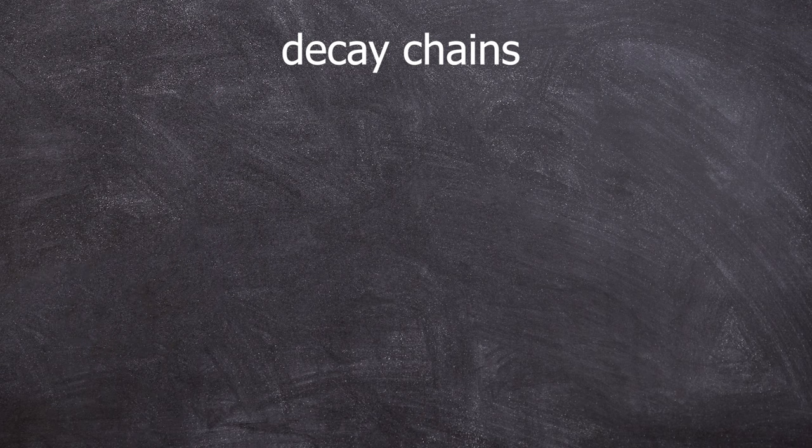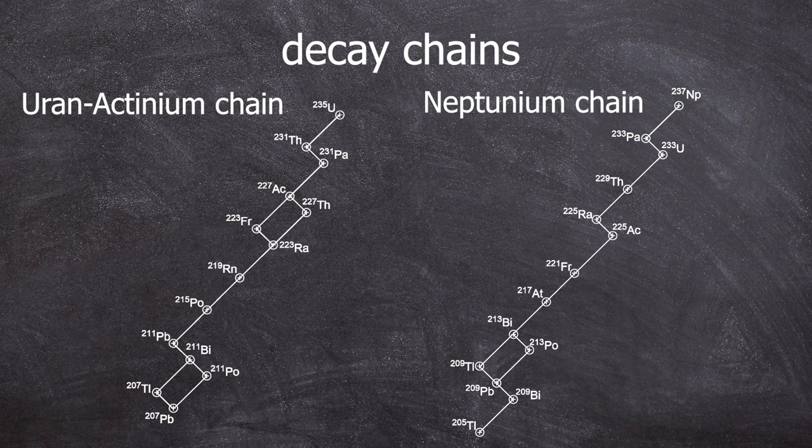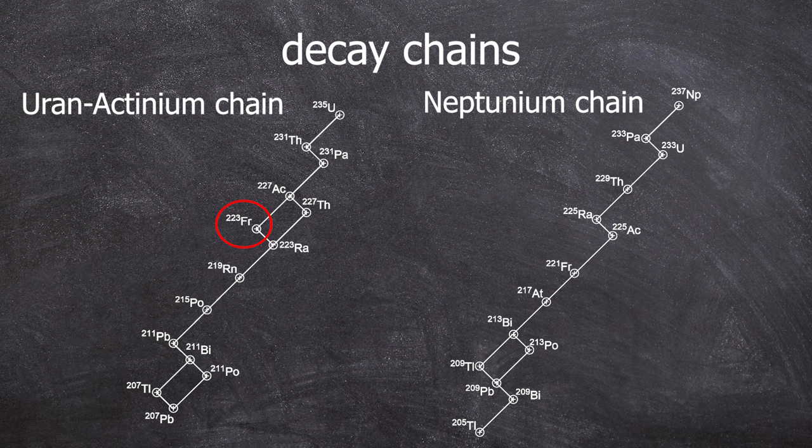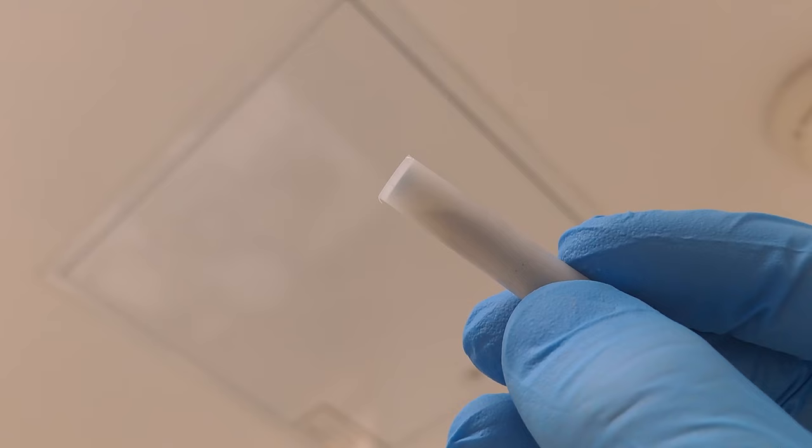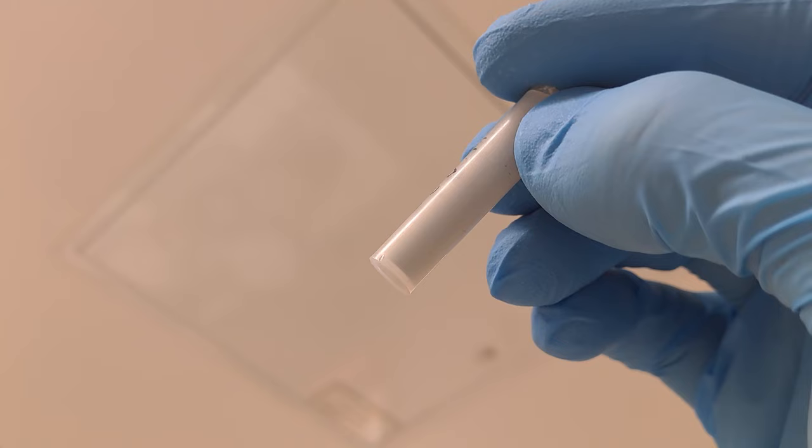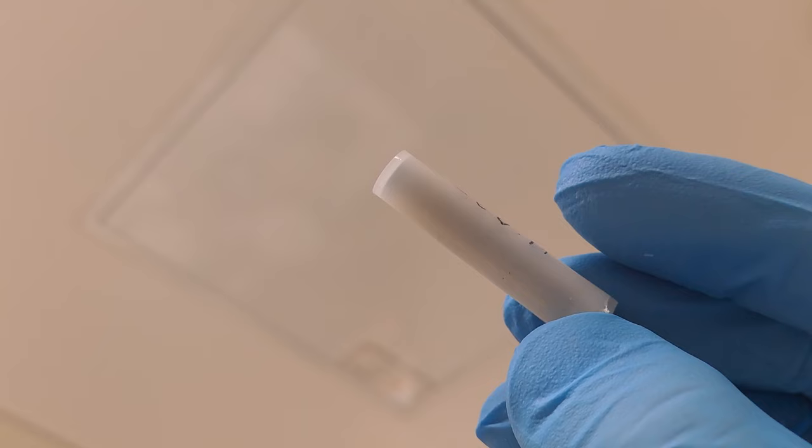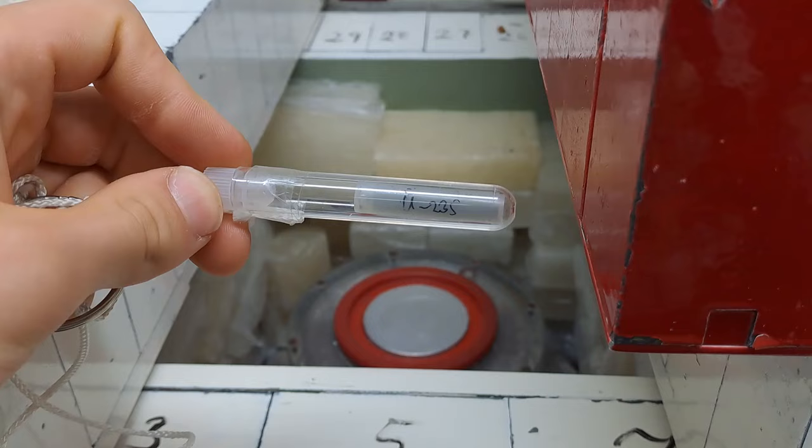Here are the decay chains. In the uranium-actinium series, starting with the weapon grade U-235, francium-223 appears. However, actinium-227 decays only 1.38% of the time through an alpha decay into francium. And how do we get uranium-235? We have 97% pure uranium-235 as U3O8 uranium oxide. 97% refers not to the total weight, but to the U-235 content compared to other uranium isotopes like U-234, U-236 and U-238.